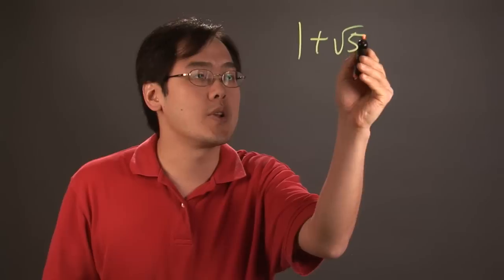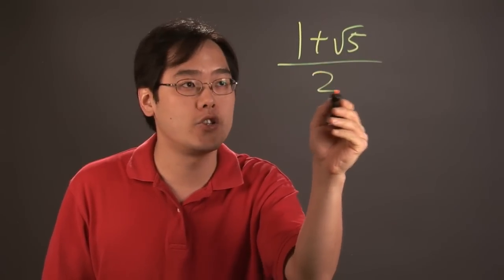Now one of the things you want to think about is that the golden ratio is written as 1 plus square root of 5 over 2.